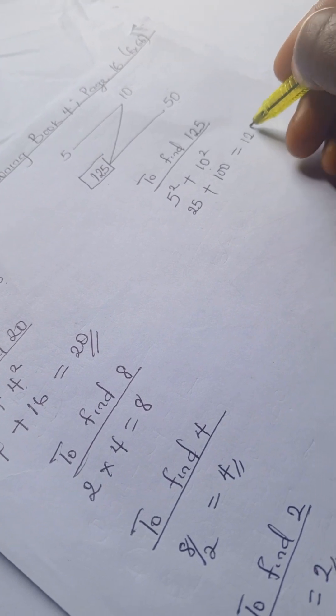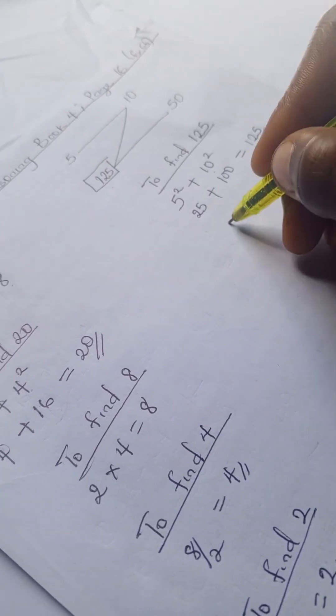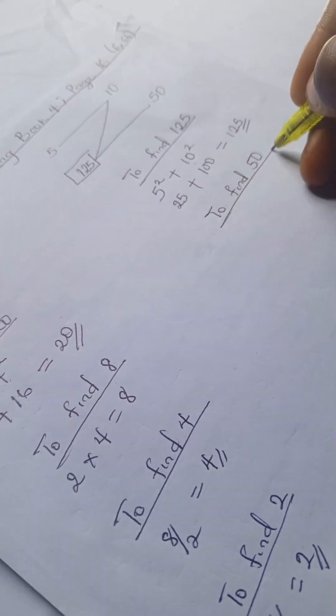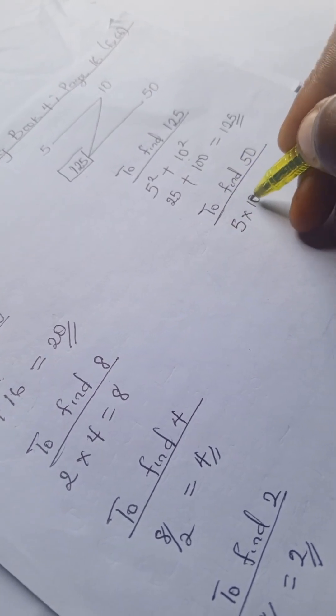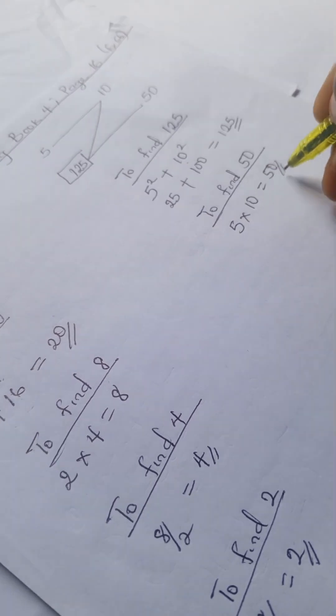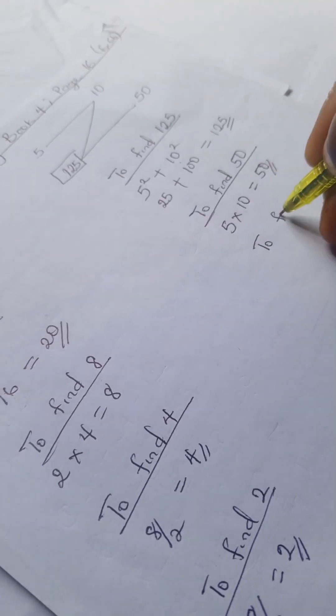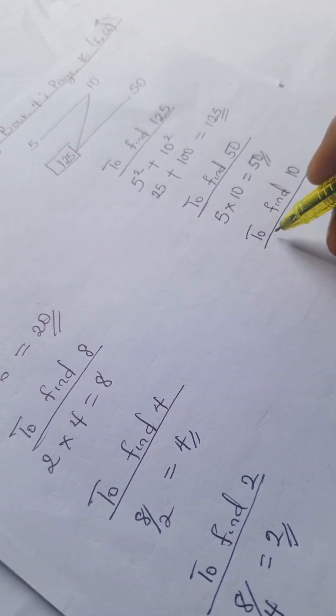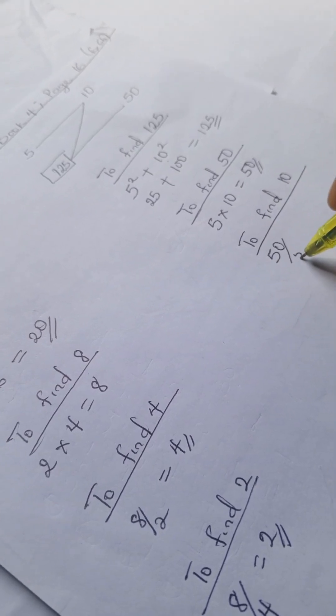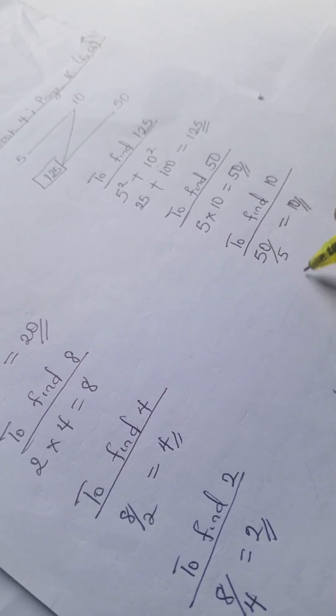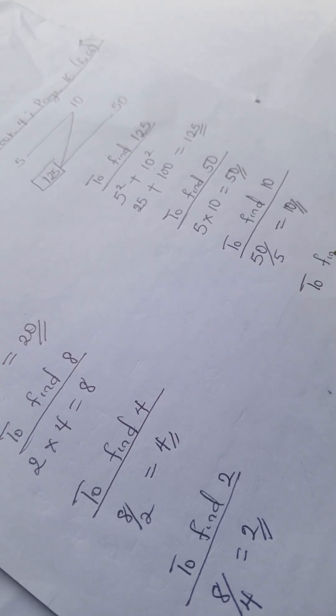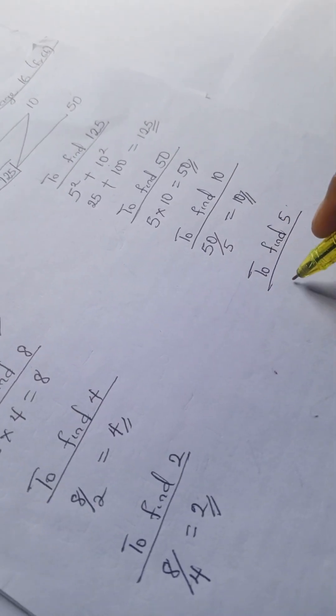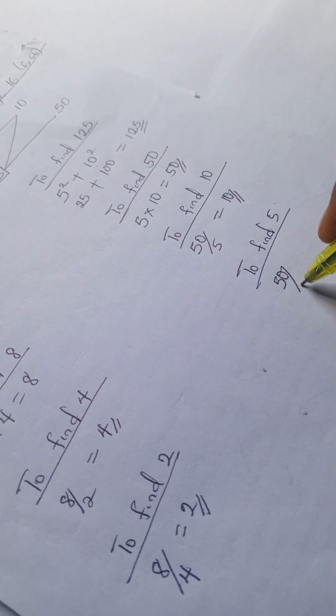To find 5, we have 50 divided by 10, that gives us 5. Don't forget to like and subscribe to this channel for more quantitative reasoning solutions and mathematics problems.